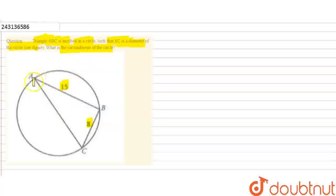This is the approach: first we find the value of AC, then we get the radius, and then we get the circumference.